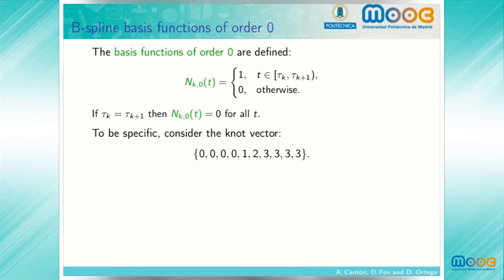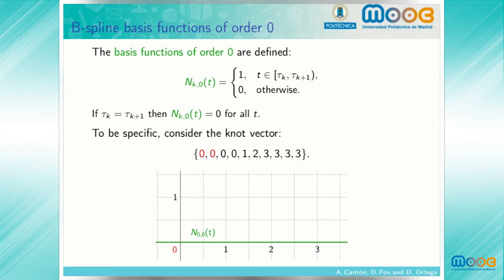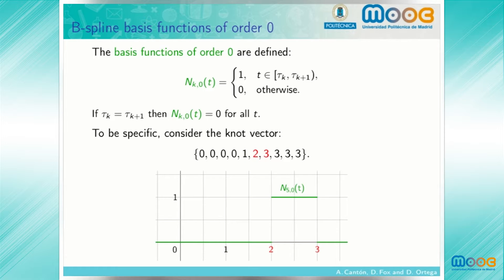To be specific, we consider the knot vector formed by four 0s, a 1, a 2, and four 3s. Since the first two knots are the same, the first basis function is identically equal to 0. The same is true for the second and third basis functions. The fourth basis function is not identically 0: it equals 1 between 0 and 1, and 0 outside that interval. The next basis function equals 1 on the interval 1 to 2, the following one is displaced one more step to the right, and the remaining basis functions are all identically 0 because the corresponding knots are repeated.